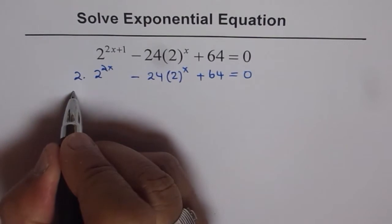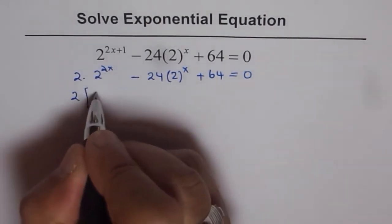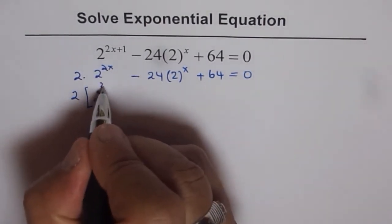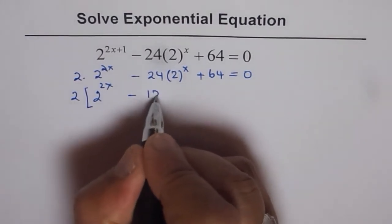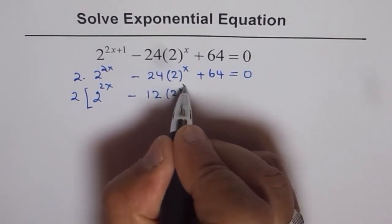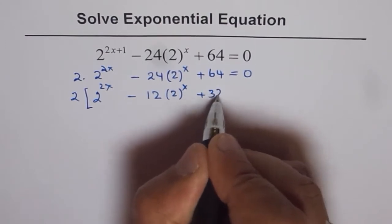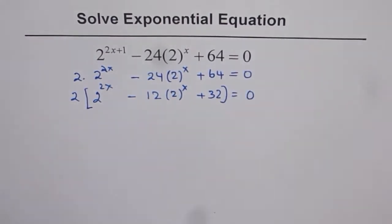Now, we can take 2 common. So if I take 2 common, I am left with 2 to the power of 2x minus 12, 2 to the power of x plus 32 equals to 0.